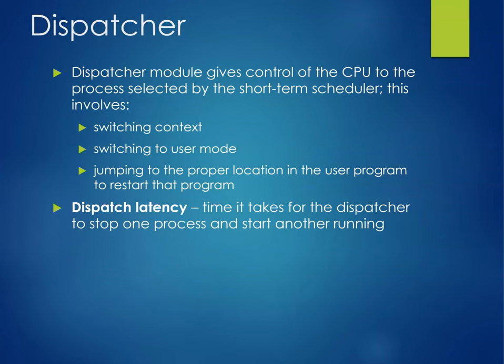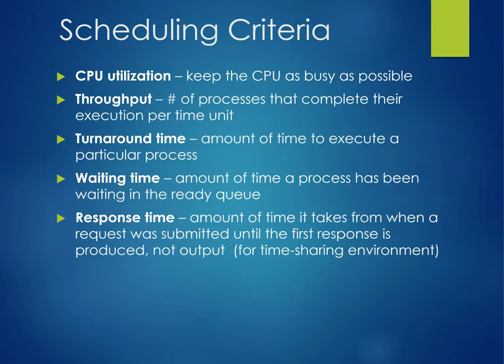The dispatcher module gives control of the CPU to the process selected by the short-term scheduler. This involves switching the context, switching back to user mode if you're not in it, jumping to the proper location in the user program to restart that program, and it has to deal with dispatch latency — the time it takes for the dispatcher to stop one process and start running another. You don't want too many processes swapping in and out, or you will lose a considerable portion of your power to swapping.